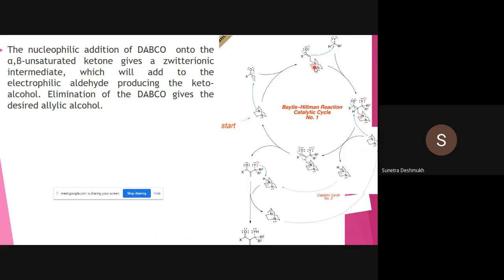The zwitterionic intermediate means positive charge and negative charge are localized on electronegative atoms. The positive charge is located on the nitrogen atom and the negative charge is located on the electronegative oxygen atom. Both nitrogen and oxygen are electronegative atoms possessing opposite charges. Nitrogen cannot possess this positive charge for a longer time, yet it stabilizes the alpha-beta unsaturated carbonyl compound.